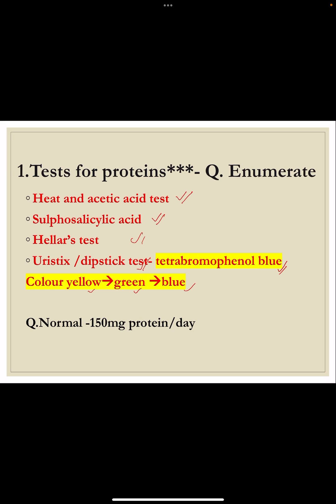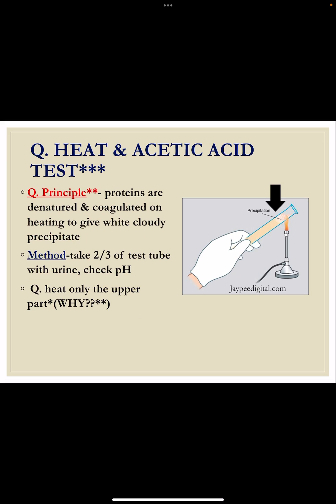These tests mainly detect albumin. The normal range for proteinuria is less than 150 milligrams protein per day; more than that is abnormal. The most commonly asked test in the exam is the heat and acetic acid test. The principle is that proteins are denatured and coagulated when heated, giving a cloudy precipitate at acidic pH. Before performing the test, check the pH, and if it is alkaline, make it acidic by adding a few drops of glacial acetic acid.